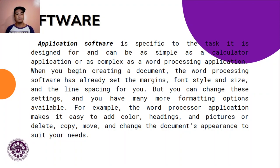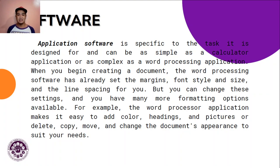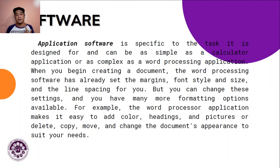Application software — or simply apps — are often called productivity programs or end-user programs. They enable users to complete tasks such as creating documents in MS Word, making spreadsheets, doing online research, sending email, designing graphics, running businesses, and playing games. Examples include Facebook, Facebook Messenger, Mobile Legends, Gmail, Google Meet, and Microsoft Word. They are intended for the end user.